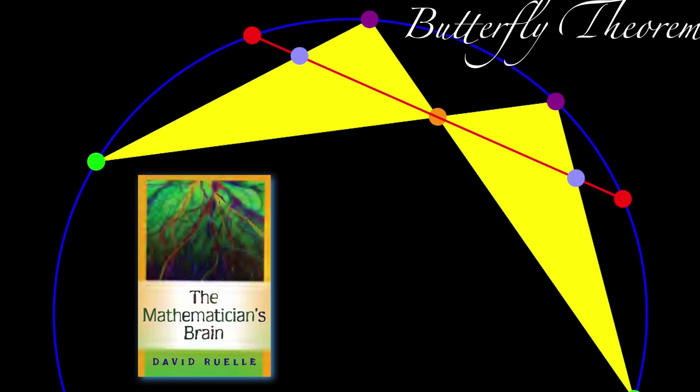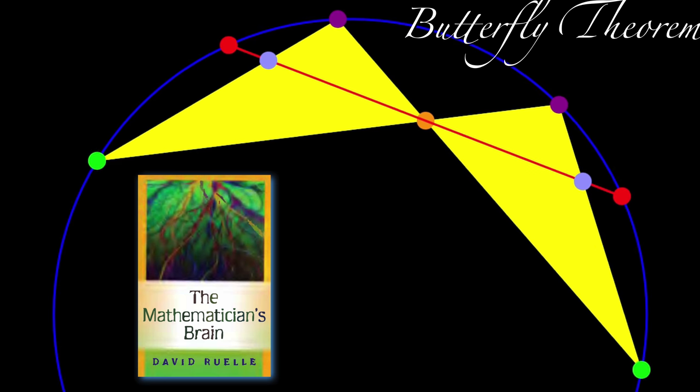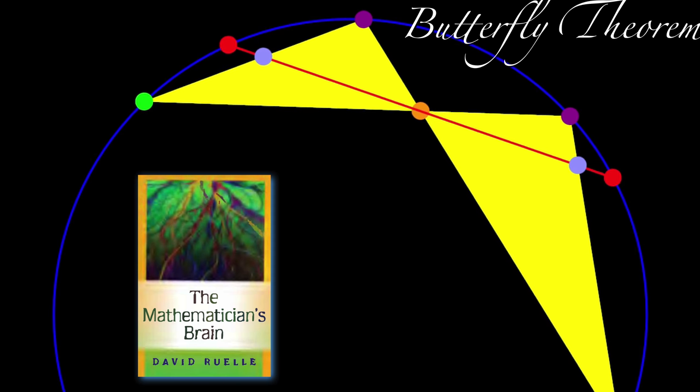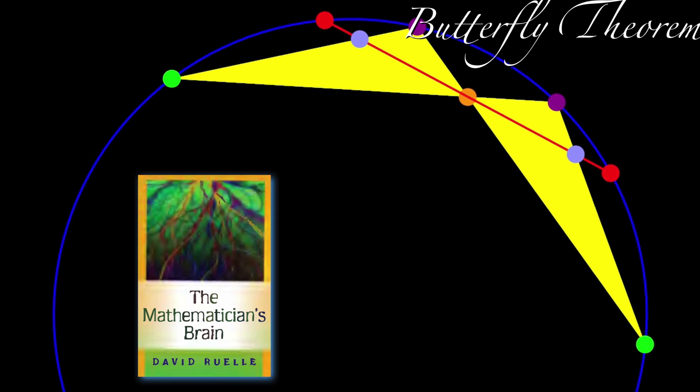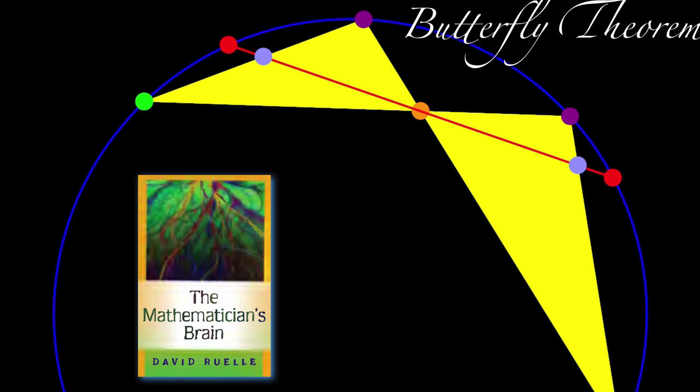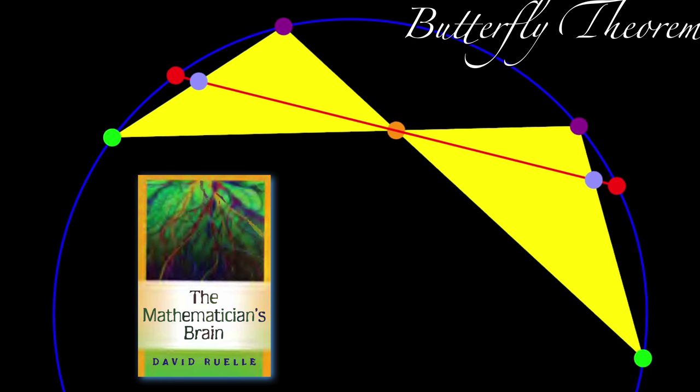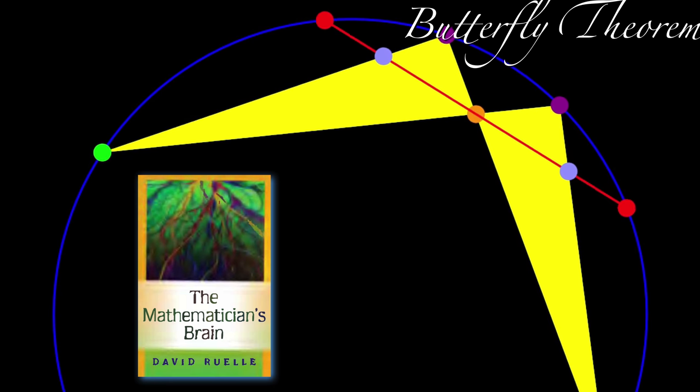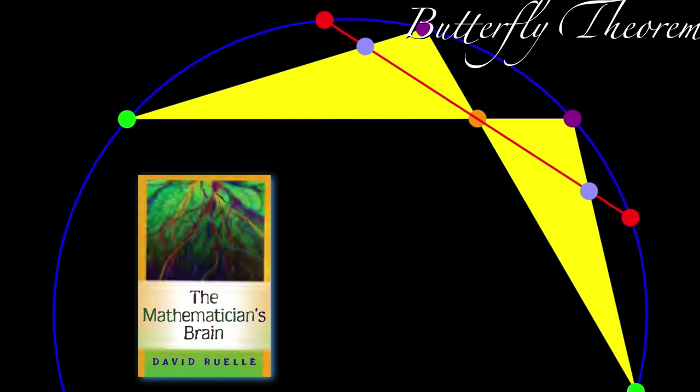And this is the butterfly theorem. It is described in the book The Mathematician's Brain by David Ruelle. Start with a line segment, seen in red. Form two other line segments through the middle. This gives the butterfly shape. Now a line segment cuts the triangles in equal length.